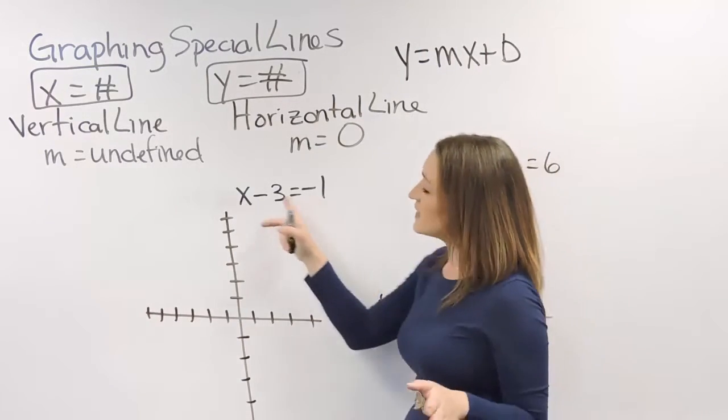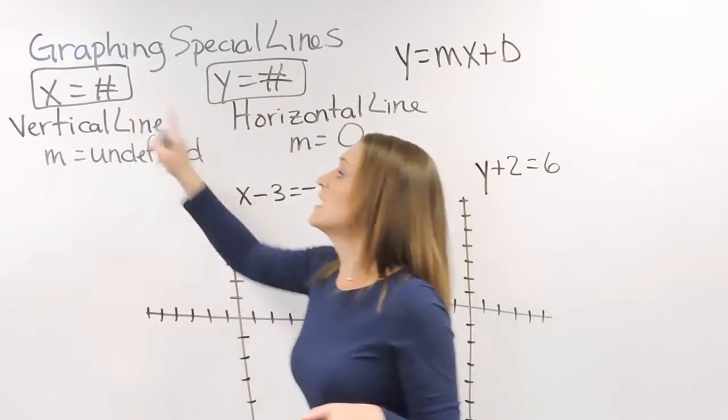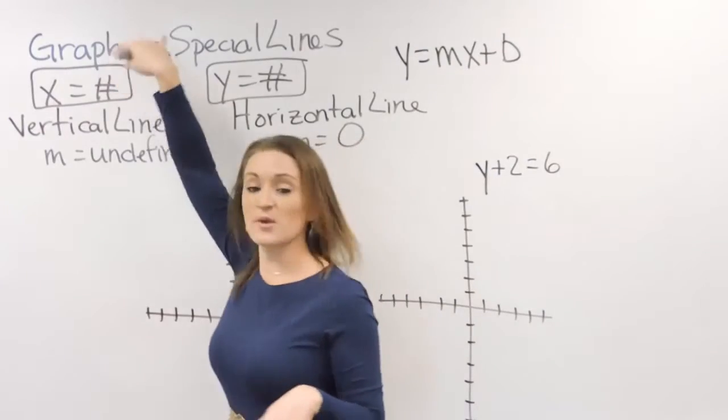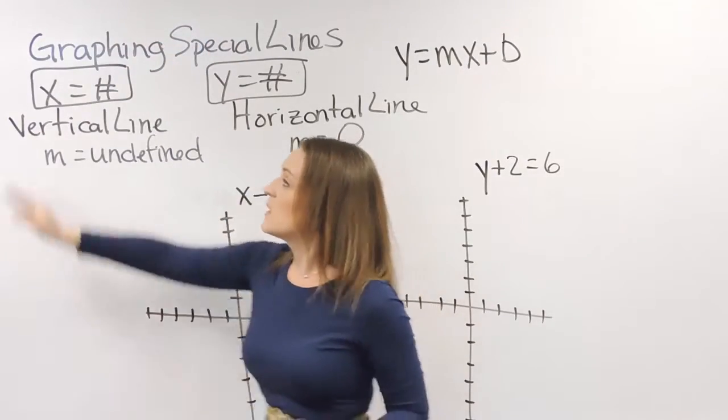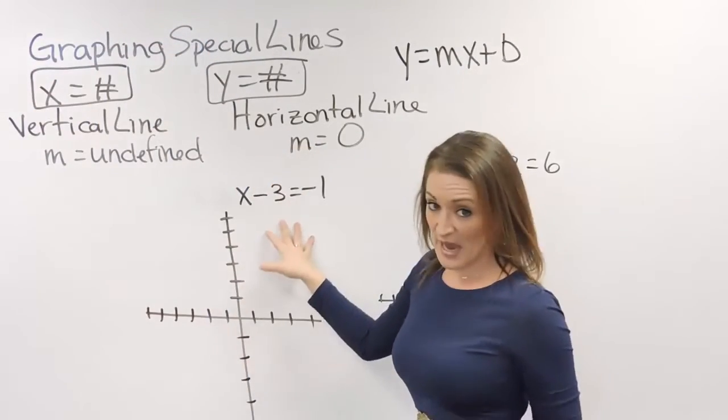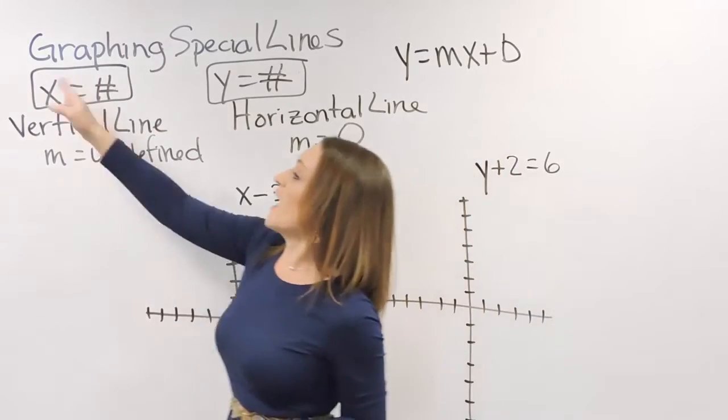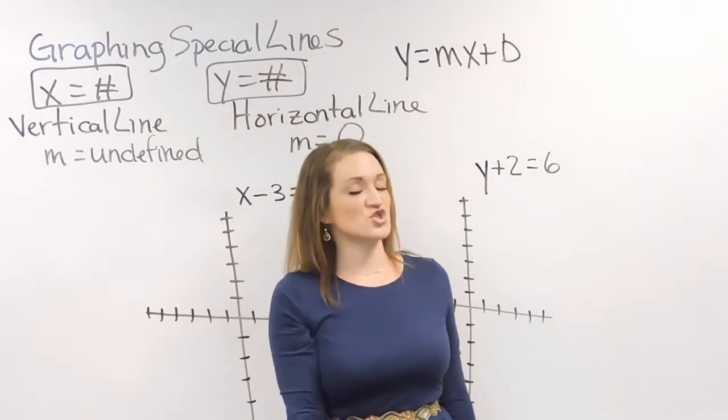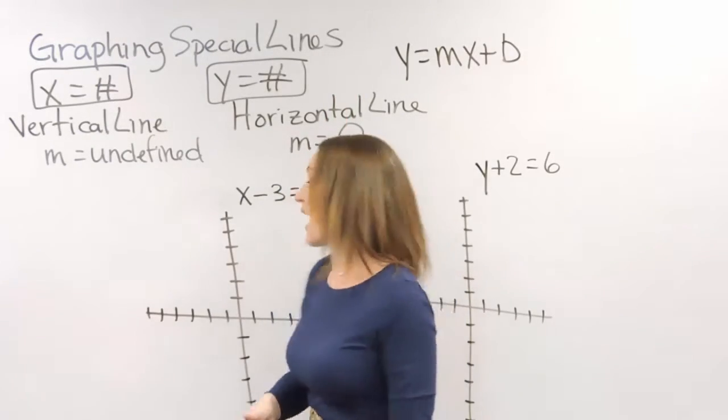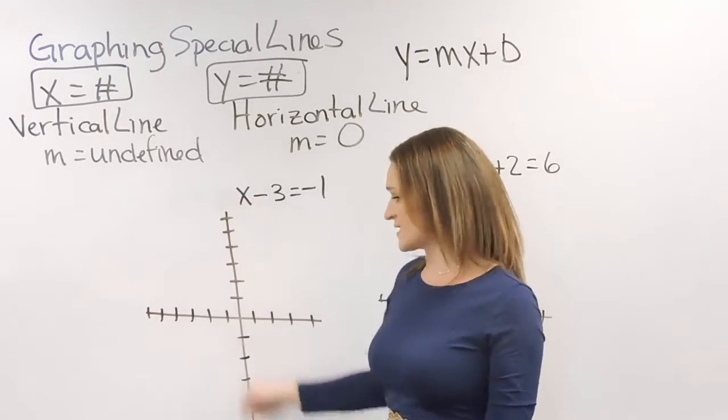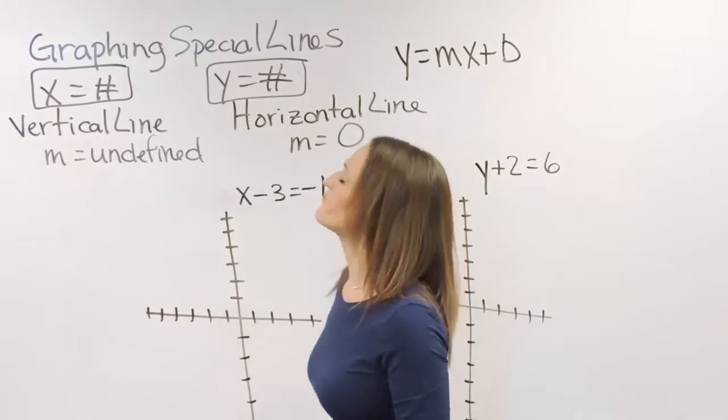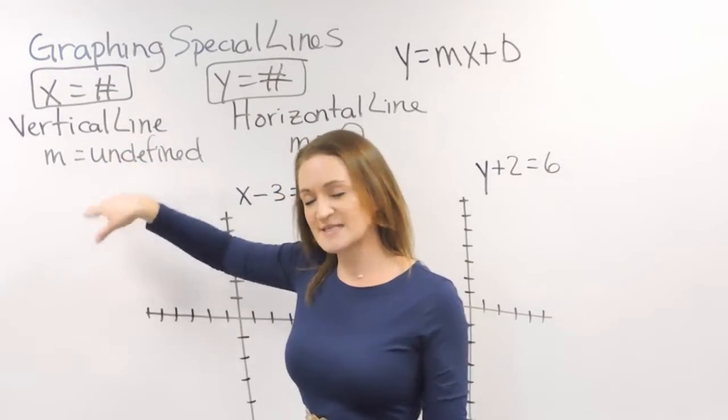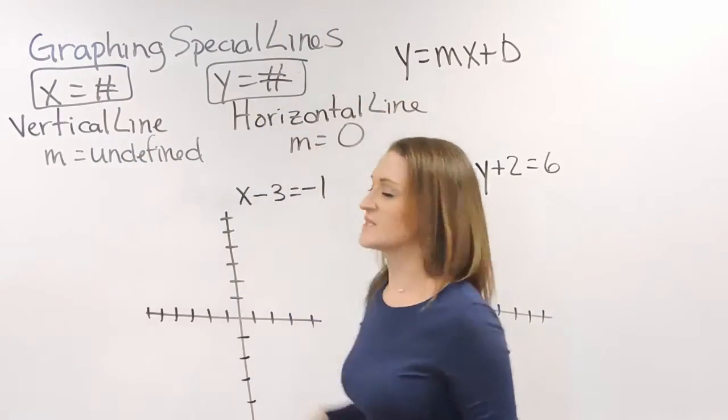First off, if you're given the example that has an x in it, if you're given an example that has x equals some number, doesn't matter really right now what that number is equal to, but it's an x equals a number, kind of like what we have here. The x equals a number, now this is a vertical line. It is a vertical line that goes straight up and down on your graph, similar to the y-axis here. The slope for your vertical lines is always undefined—they shoot straight up. That's an undefined slope.